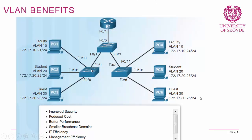Looking at a topology with three switches connecting to a router, we have three PCs on one switch and three PCs on another. We want PC1 and PC4 to be in the same network and PC2 and PC5 to be in one network. So we configure three different VLANs — VLAN 10, 20, and 30 — on each switch and assign ports accordingly. This configuration is the equivalent of having three separate switched networks, but done logically instead of physically.